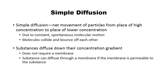Simple diffusion starts on page 88 of your textbook. It is the net movement of particles from a place of high concentration to low. A good example is dropping methylene blue dye into a beaker of water — it disperses from highly concentrated at the top all the way down. By the end of class, the water is completely blue because dynamic equilibrium has been reached and diffusion stops.